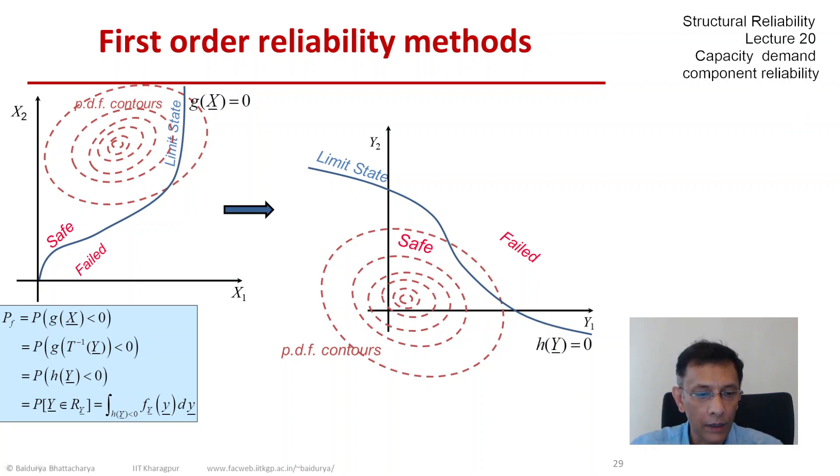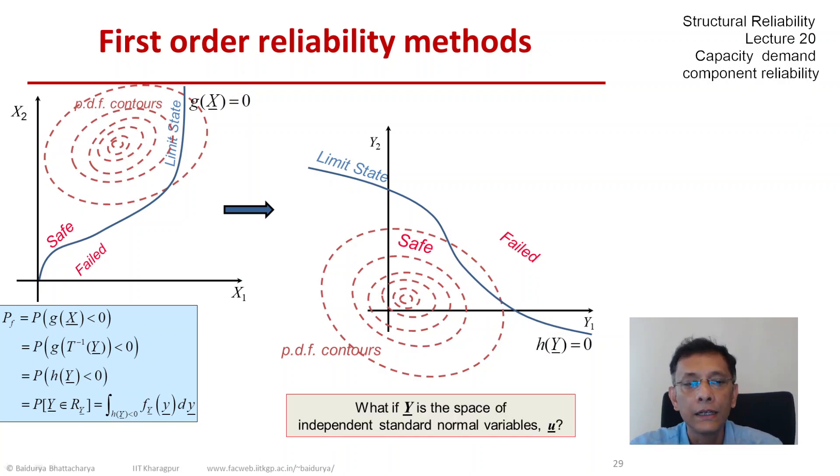There is a very key question here, and this was one of the breakthroughs in early structural reliability: what if this y, this space y, is the space of independent standard normal variables?